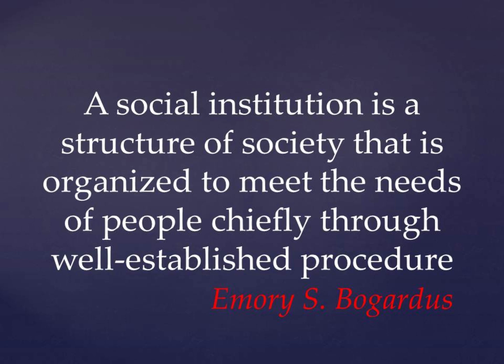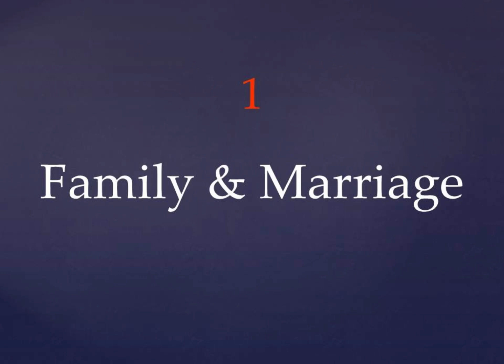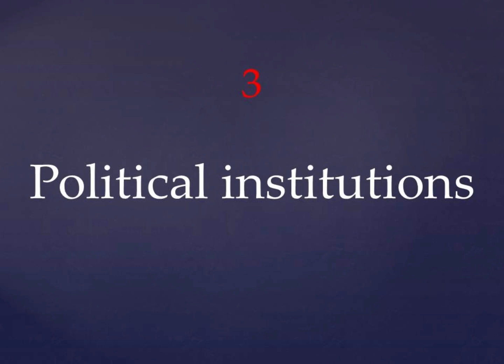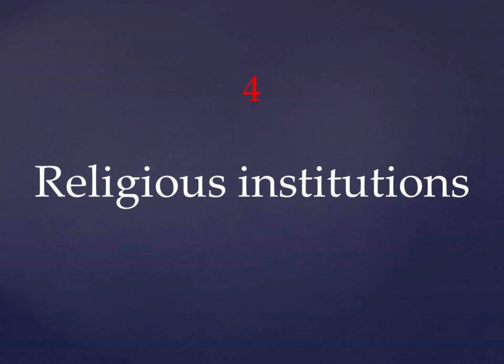Institutions can be categorized as following. First one is family and marriage. The second one is economic institutions, which are related to the production and distribution of the basic necessities of the individuals. The third one is political institutions, that perform the control and regulation of the society. The fourth one is religious institutions, which are related to the religious life of the individuals including education.